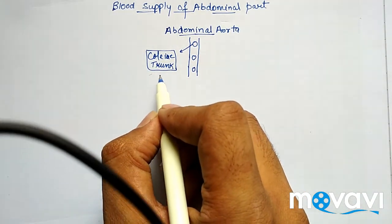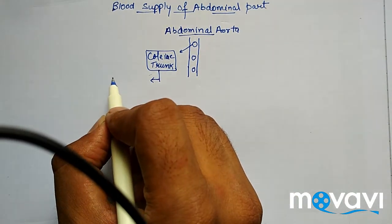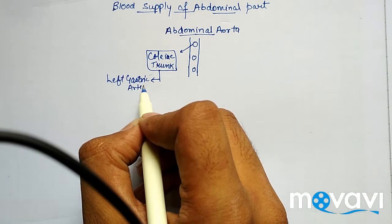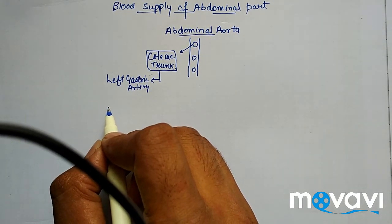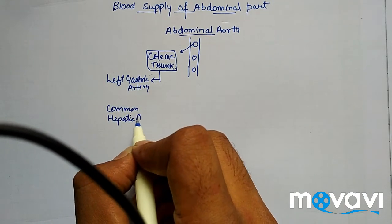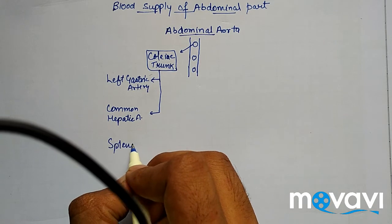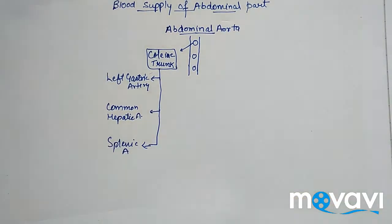First of all we will discuss the celiac trunk. The celiac trunk is further divided into three branches. The first branch arising from the celiac trunk is the left gastric artery. The second branch is the common hepatic artery, and the third branch is the splenic artery.